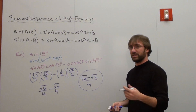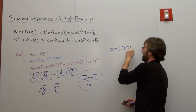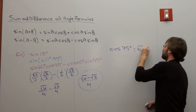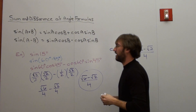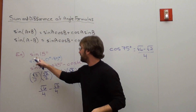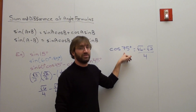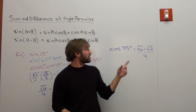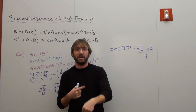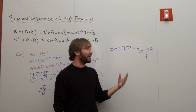Coincidentally, that's the same answer as the cosine of 75 degrees, which came out to root 6 minus root 2 over 4 in a previous lesson. That's because cosine is the co-function of sine, and 15 degrees and 75 degrees are complementary angles — they add up to 90. If you're working with co-functions and complementary angles, those values will always match. For example, if it were 10 and 80 degrees, their answers would be the same.